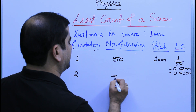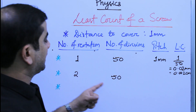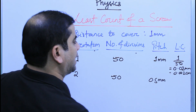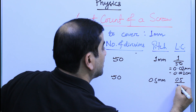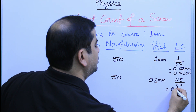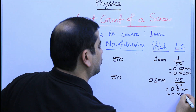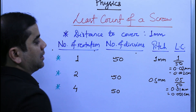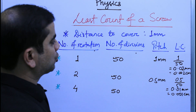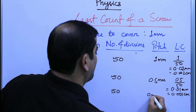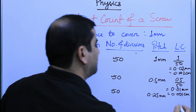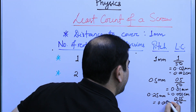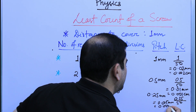When the number of rotations is increased to 2 and the number of divisions remains 50, the pitch becomes 0.5 millimeter. So the least count is 0.5 divided by 50, giving 0.01 millimeter or 0.001 centimeter. If the number of rotations increases to 4, the pitch becomes 0.25 millimeter, and the least count is 0.25 divided by 50, which equals 0.005 millimeter or 0.0005 centimeter.